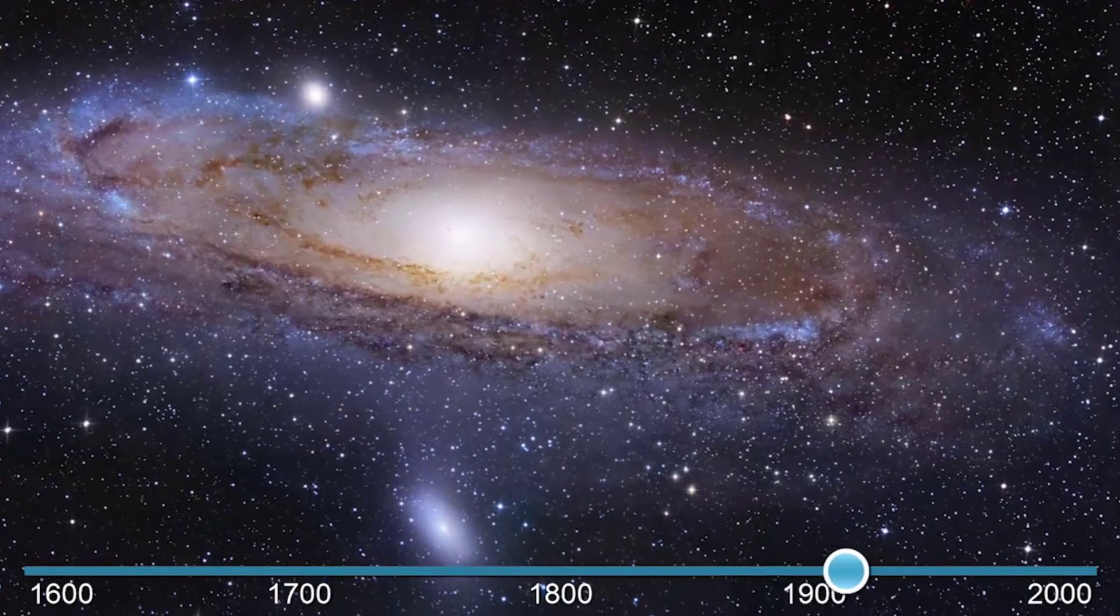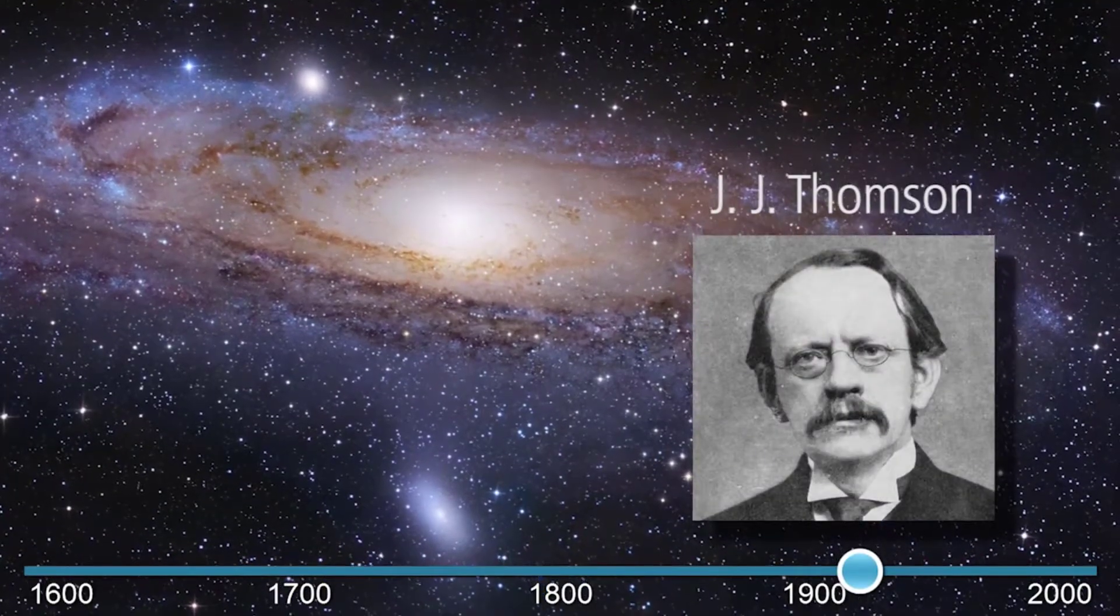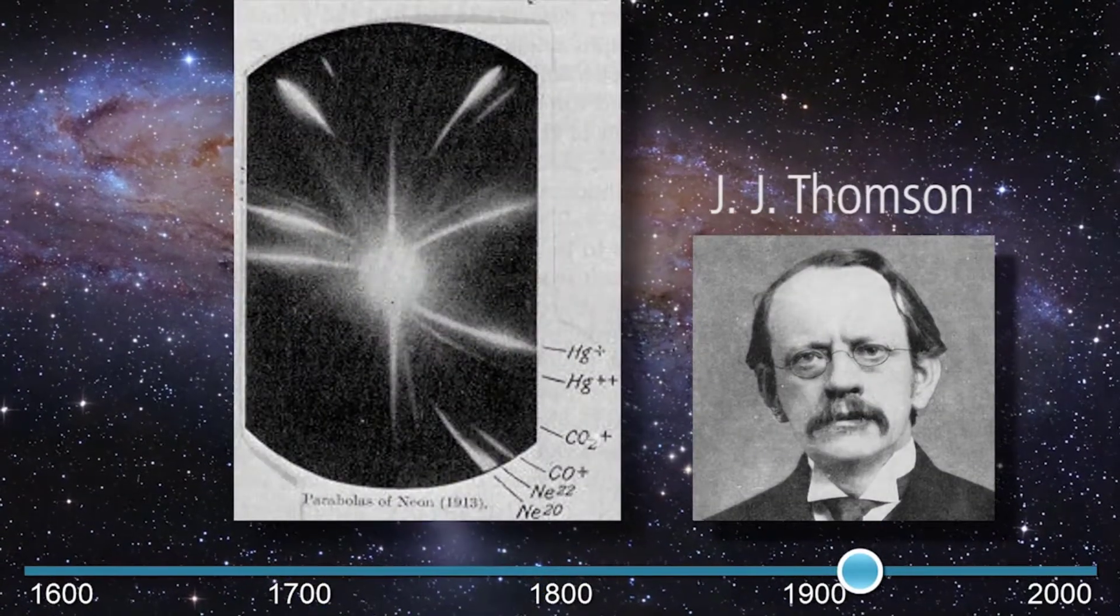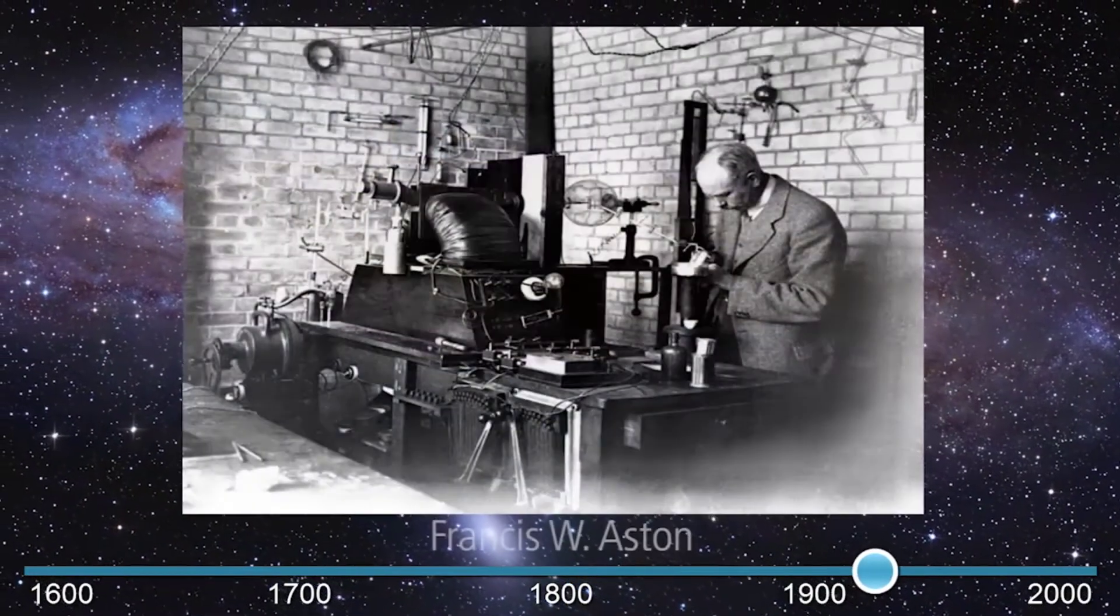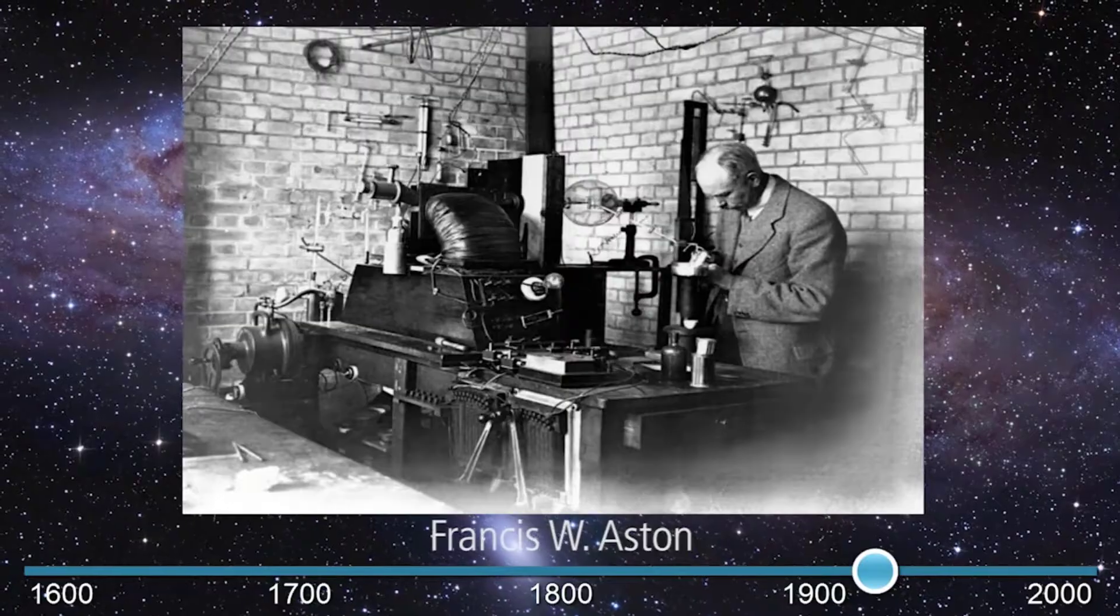Then, in the early 1900s, J.J. Thompson's experiment successfully separated ions of different masses, leading his student, Francis W. Aston, to build the first mass spectrometer in 1919.